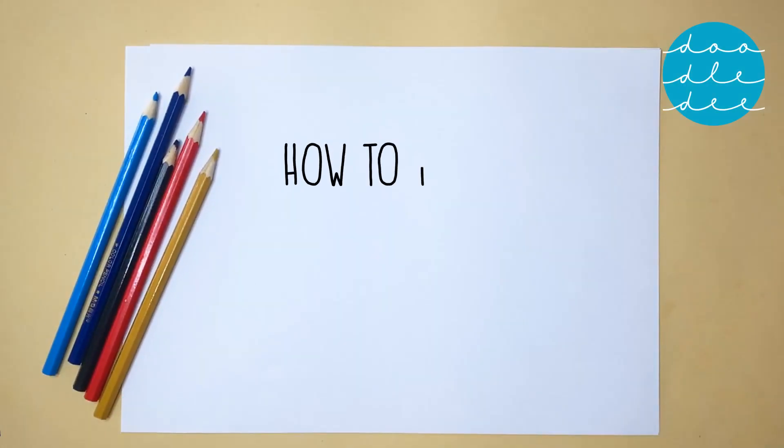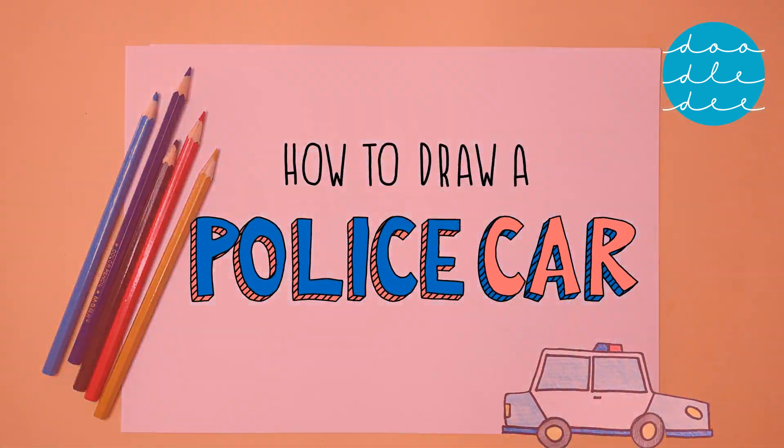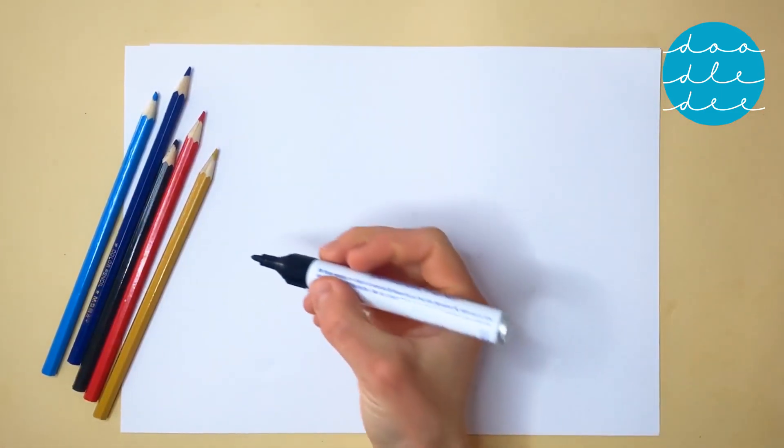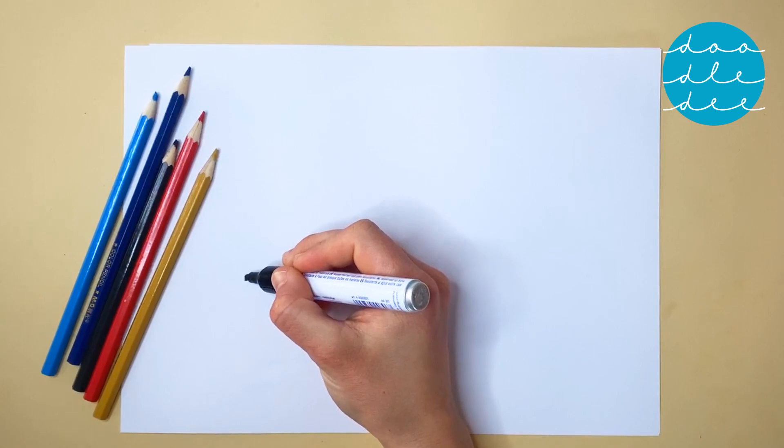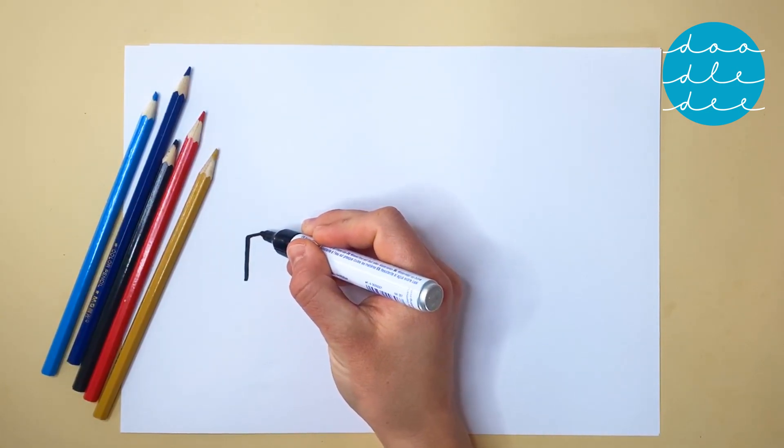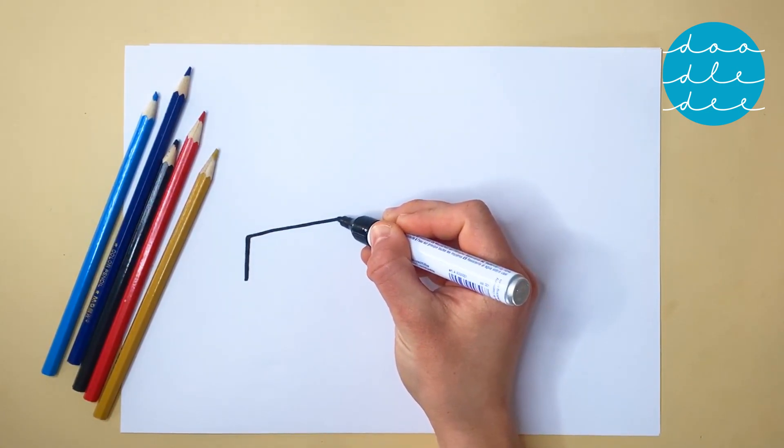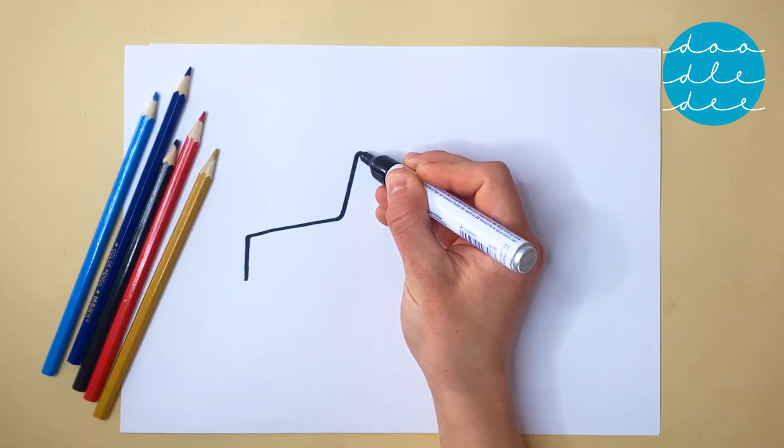How to Draw a Police Car. Start with a line that goes up, and then across, and then up again, and across one more time.